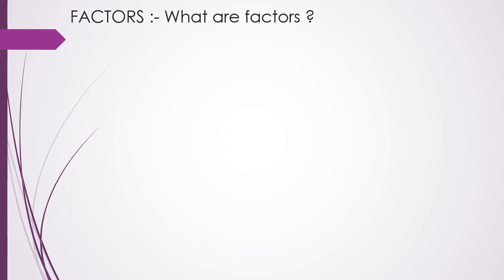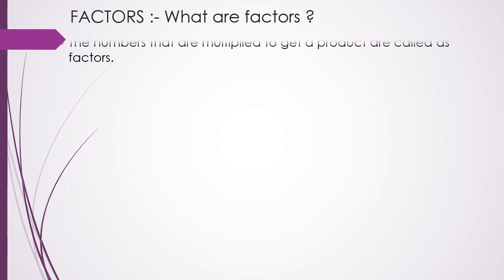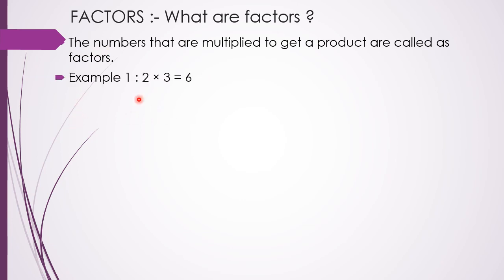Now students let us learn what factors are in detail. In class 3 you have already learned what factors are. The numbers that are multiplied to get a product are called factors. Let us take this example: 2 threes are 6. Here 2 and 3 are the factors and 6 is called the product.